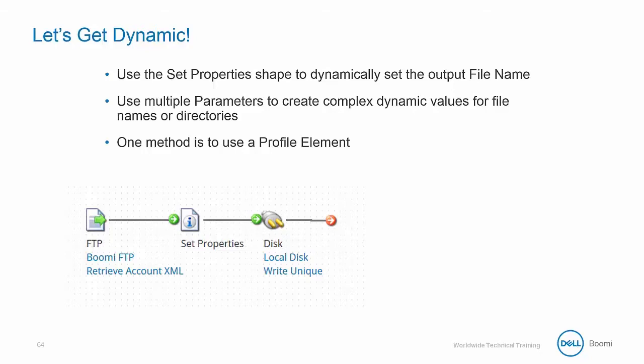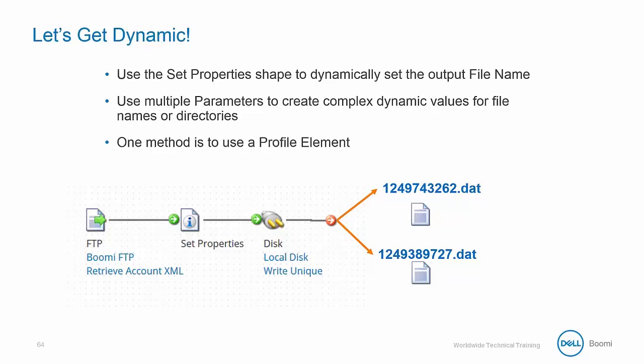So let's say we're reading in multiple files, obtaining appropriate data, and now we wish to write them individually to disk so the naming convention makes it easy to understand what's contained in each file. In the previous process execution, the files were simply using the timestamp marked in milliseconds. Using this naming convention really doesn't tell us much about the data contained in the files.